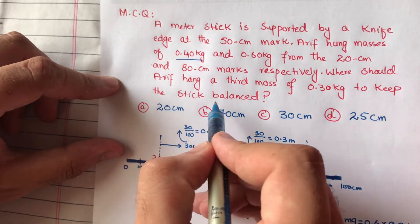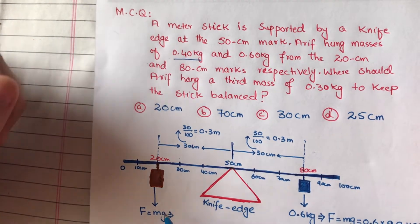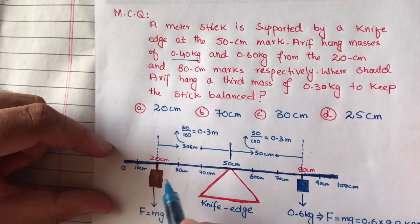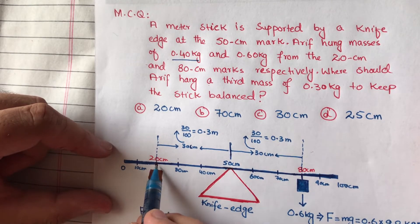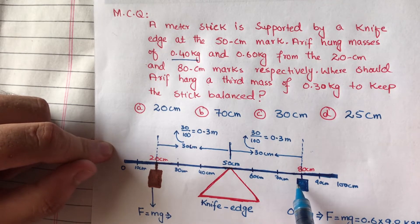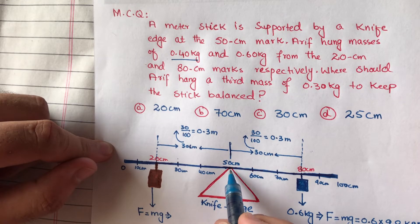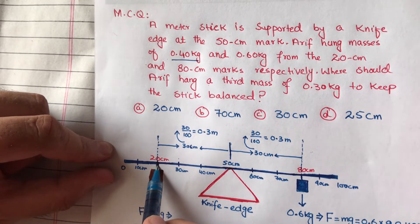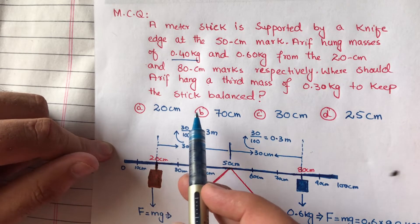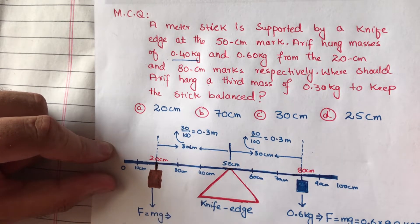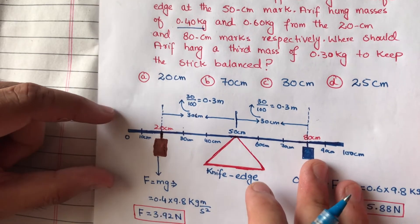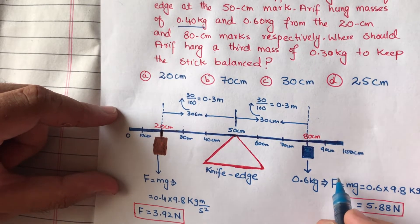First we will make a diagram. Total length is 100 centimeters because one mass is at 20 centimeters and the other mass is at 80 centimeters, and the balance point is at 50 centimeters. So total length of the stick is 100 centimeters. In the diagram, at 20 centimeters we have the 0.4 kg mass attached, and at 80 centimeters we have the 0.6 kg mass attached.